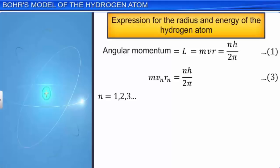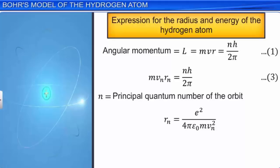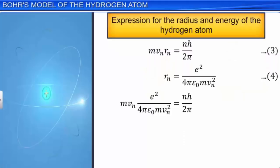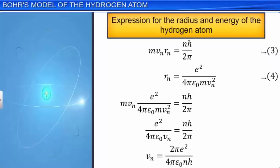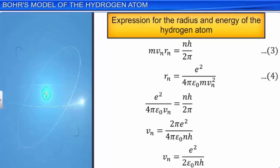The relation between the radius rₙ of the electron orbit and its corresponding velocity vₙ is given by rₙ = e²/(4πε₀mvₙ²) — equation 4. Substituting the value of rₙ in equation 3 and simplifying, we have vₙ = e²/(2ε₀nh), and rₙ = n²ε₀h²/(πme²) — equation 6.